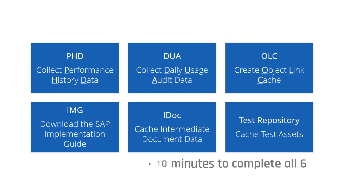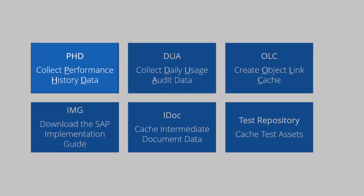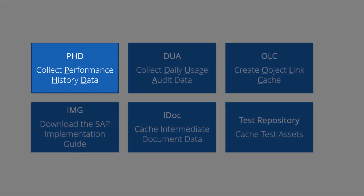First, we'll collect performance history data from SAP Production. Performance history data includes used transactions, programs, web applications, and APIs. PHD is collected each month, and in general, our customers collect 12 to 36 months.